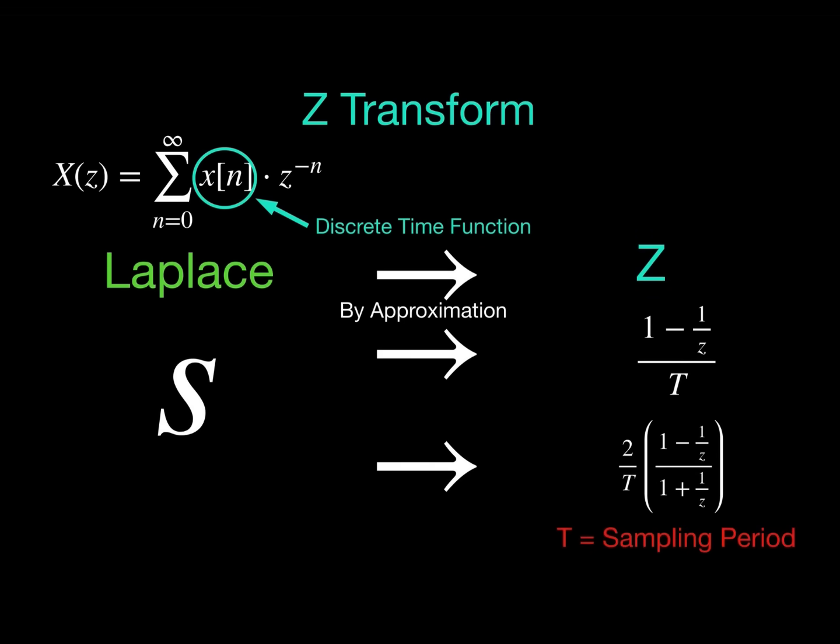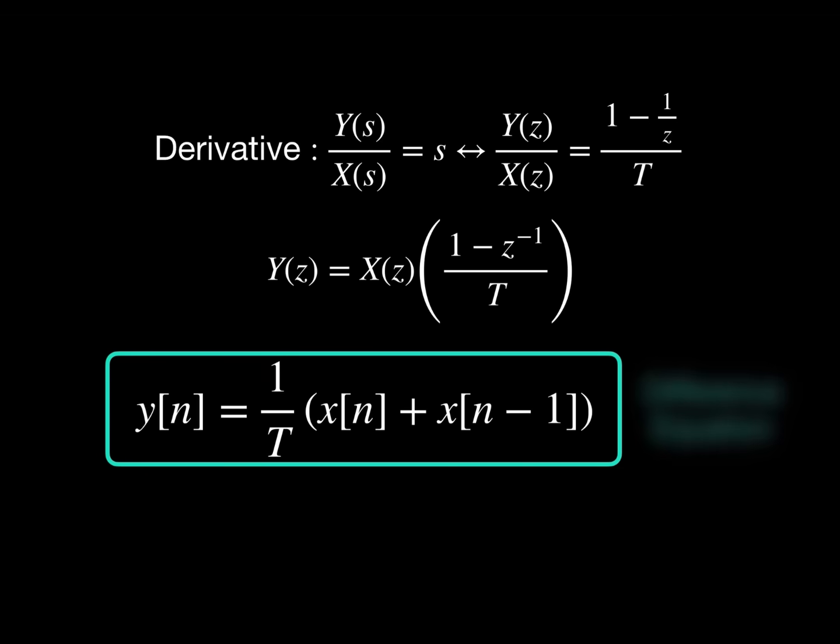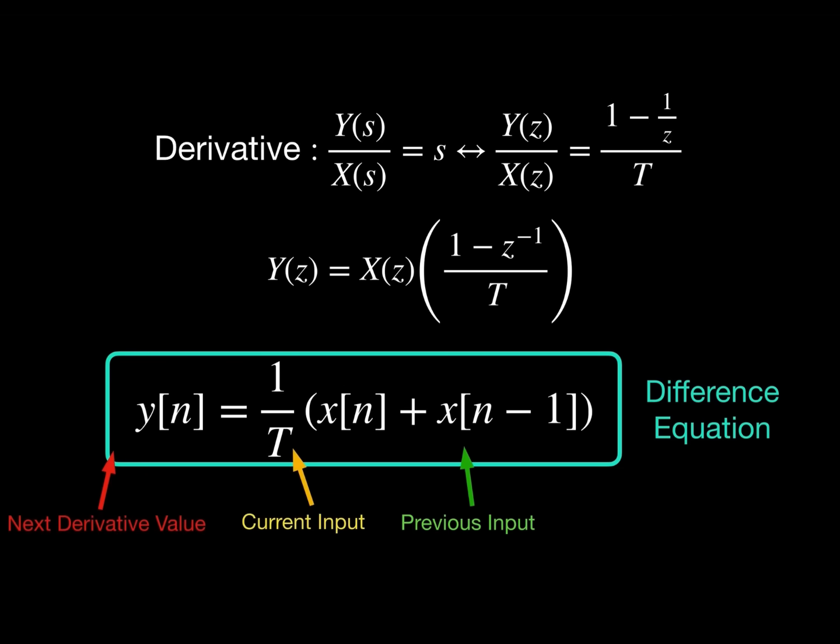The definition of the Z-transform is shown here, along with the conversion from Laplace domain to the Z-domain. This conversion is just an approximation of what is known as a conformal mapping. Consider a transfer function that obtains the derivative of an input. It is represented by the Laplace variable s. We can apply one of the mappings and then rearrange the equation. By considering the definition of the Z-transform, we can undo it to obtain the difference equation. Notice that the terms refer to current and past values only. All we now have to do is code this into a microcontroller and end up with our control signal that can be sent out to an actuator.